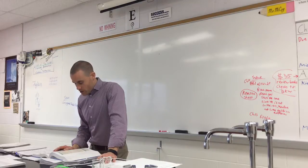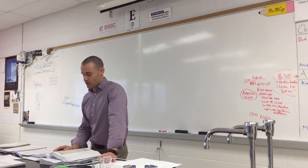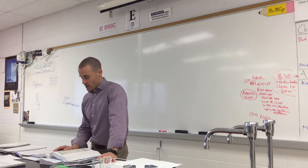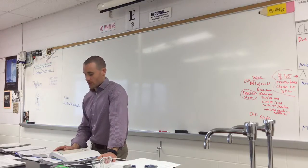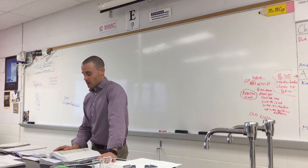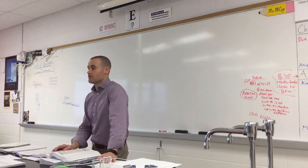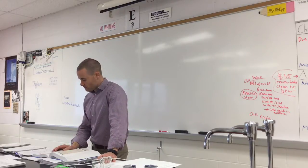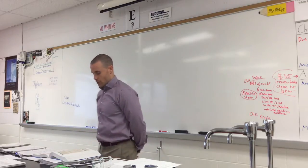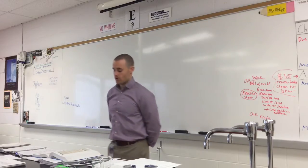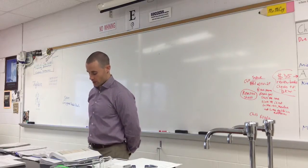Go to page 631 and do the practice exercise at the top in your notes. The reaction is CO plus CL2 yields COCl2. At 74 degrees it gives you concentrations — calculate the equilibrium constant Kc. Write the whole question in your notes so you have it, and go ahead and work through it.